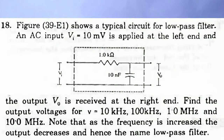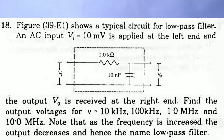HC Verma Solution, Chapter 39, Alternating Current, Question 18. The figure shows a typical circuit of a low pass filter. Input Vi is equal to 10 millivolt applied at the left end, and the output Vo is received at the right end. Find the output voltage for frequencies 10 kHz, 100 kHz, 1 MHz, and 10 MHz. Note that as frequency is increased, the output decreases — hence the name low pass filter.